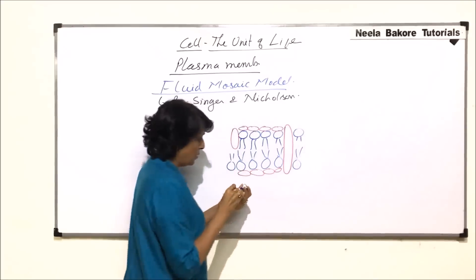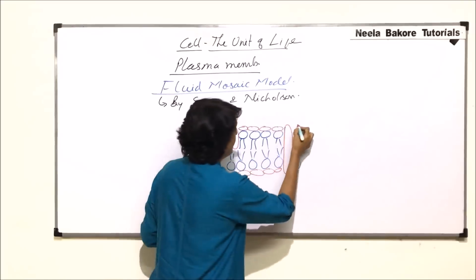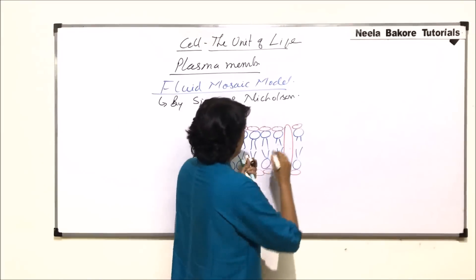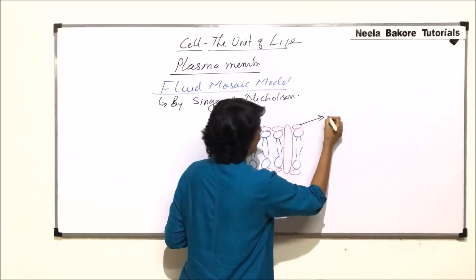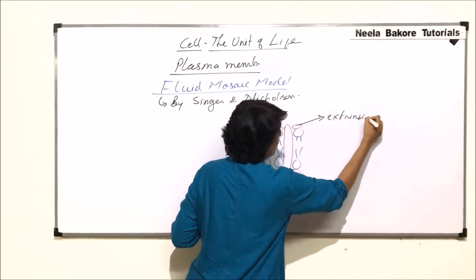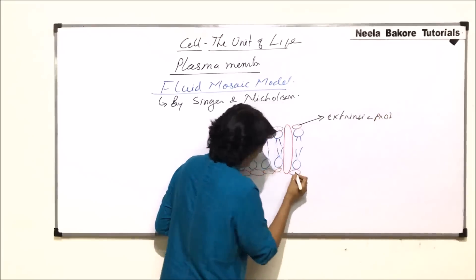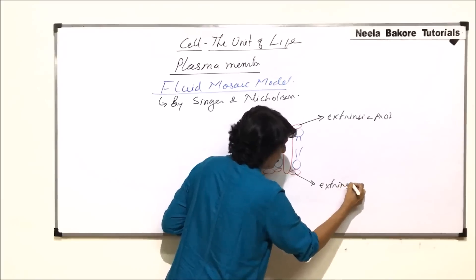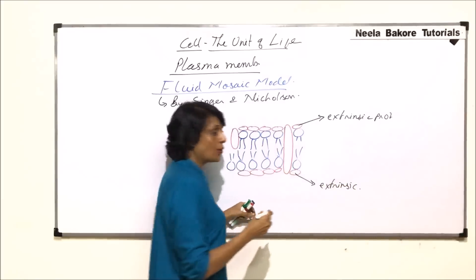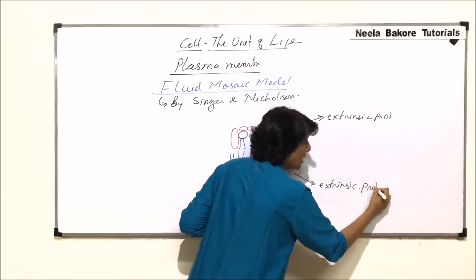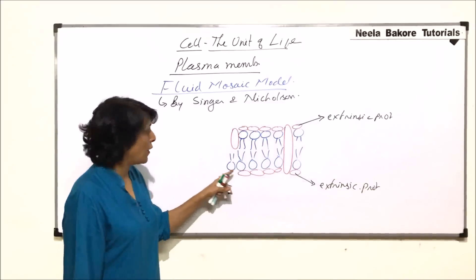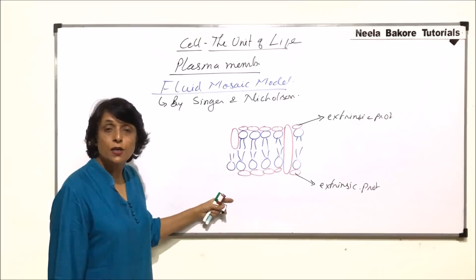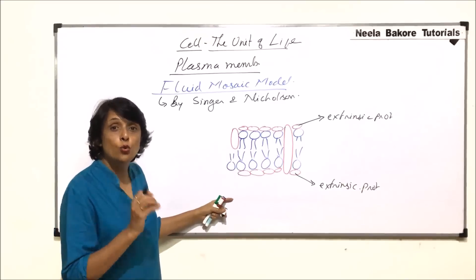These are phospholipids and proteins. Let us label all these parts. This one is extrinsic protein, and this also is extrinsic protein. Extrinsic proteins are attached to the heads of the phospholipid. They are attached loosely.